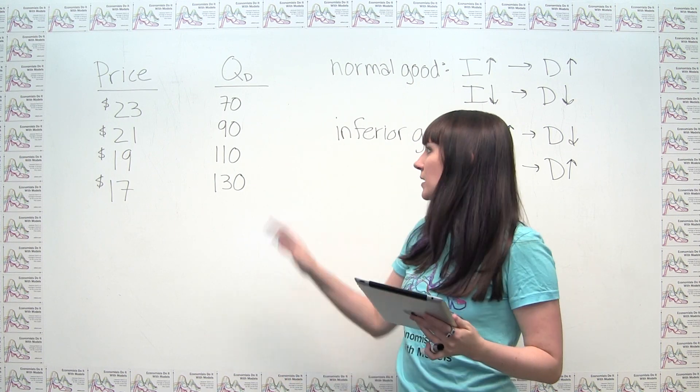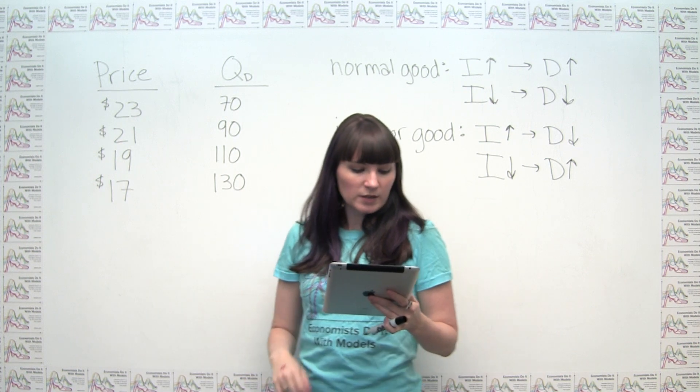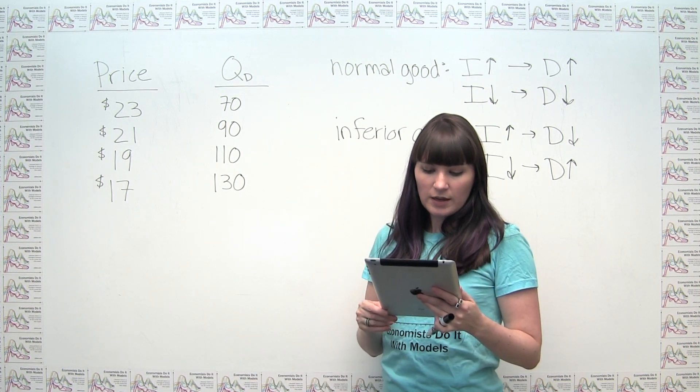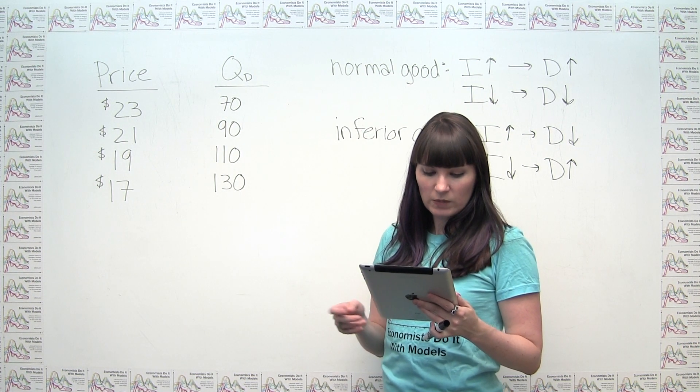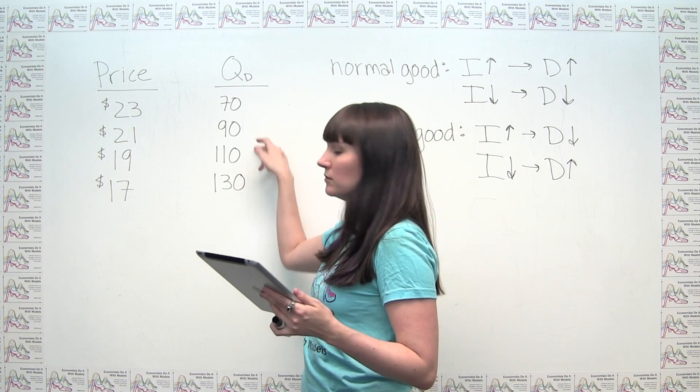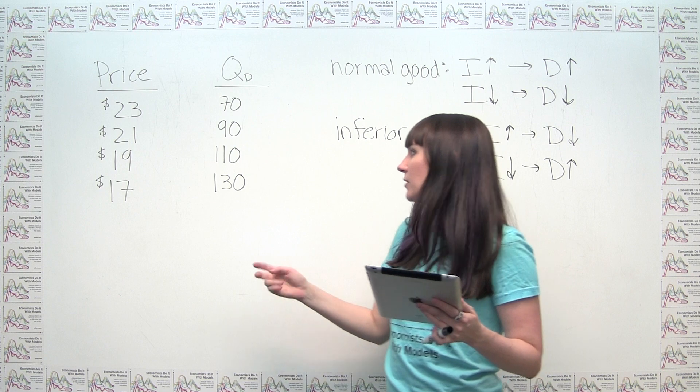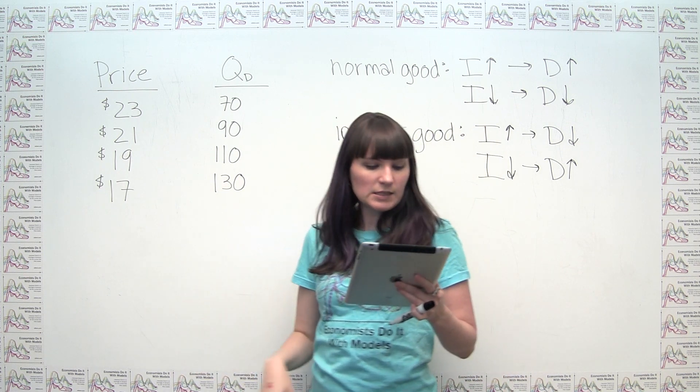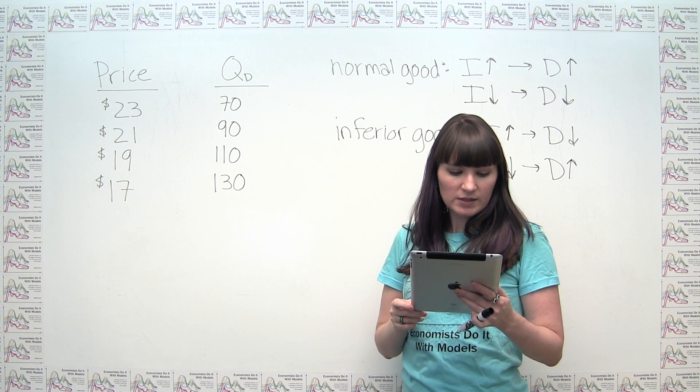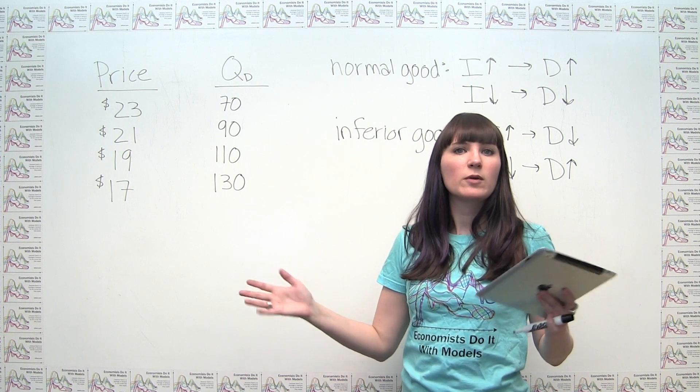But nonetheless, we have these definitions in mind so that we can actually answer the questions that are being asked. So, again, back to this demand schedule. Part A of the question asks, do you think that the increase in quantity demanded, say, from 90 to 110, in the table? So, when price decreases, say, from 21 to 19, is due to a rise in consumers' income. Explain why or why not.